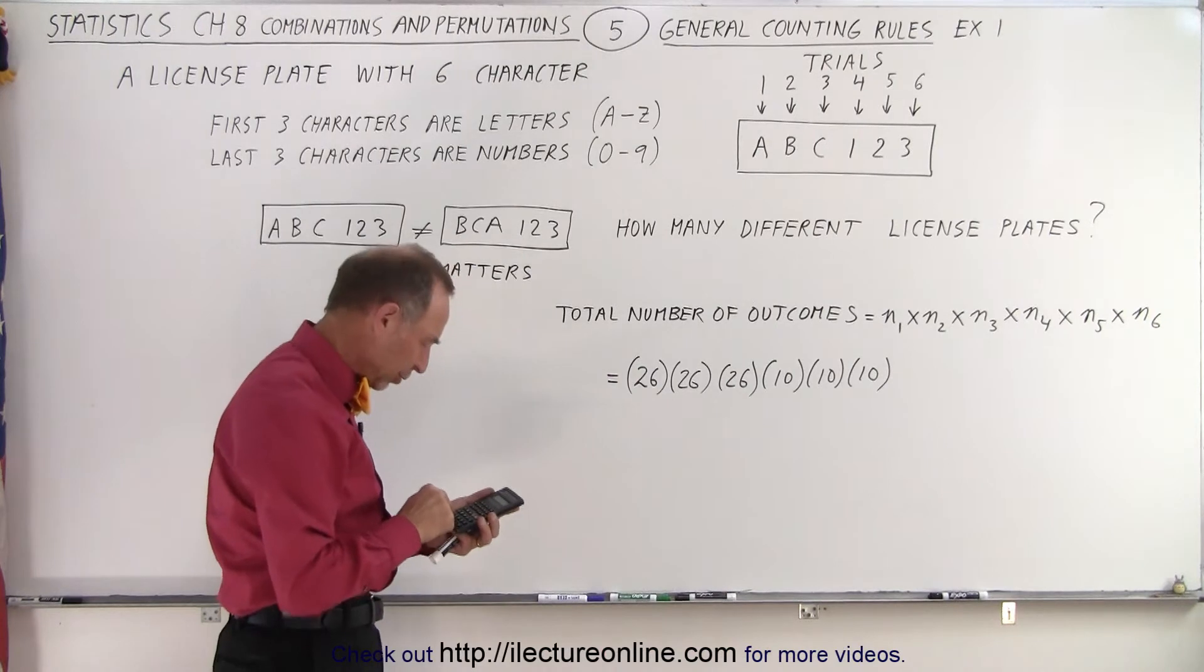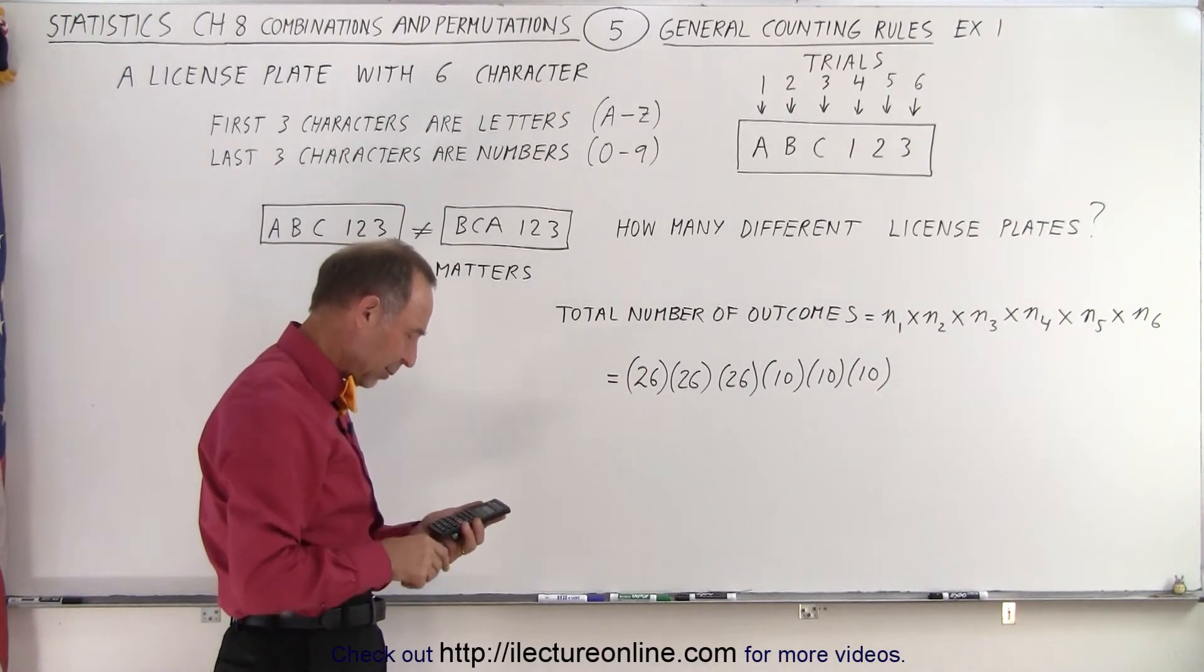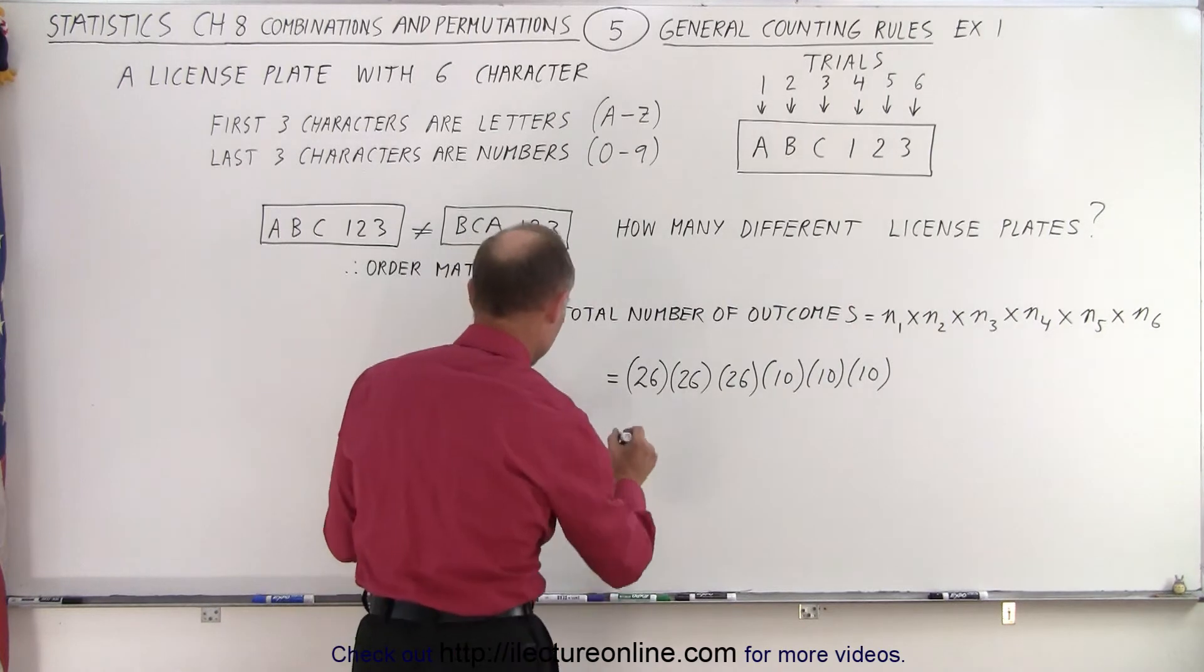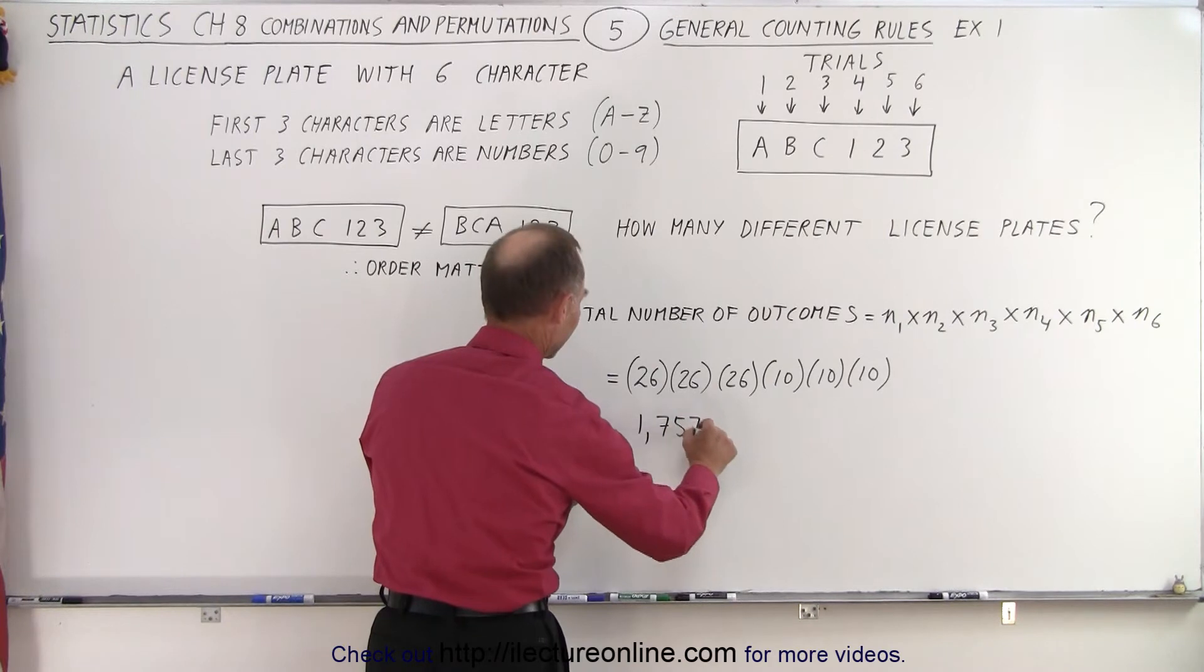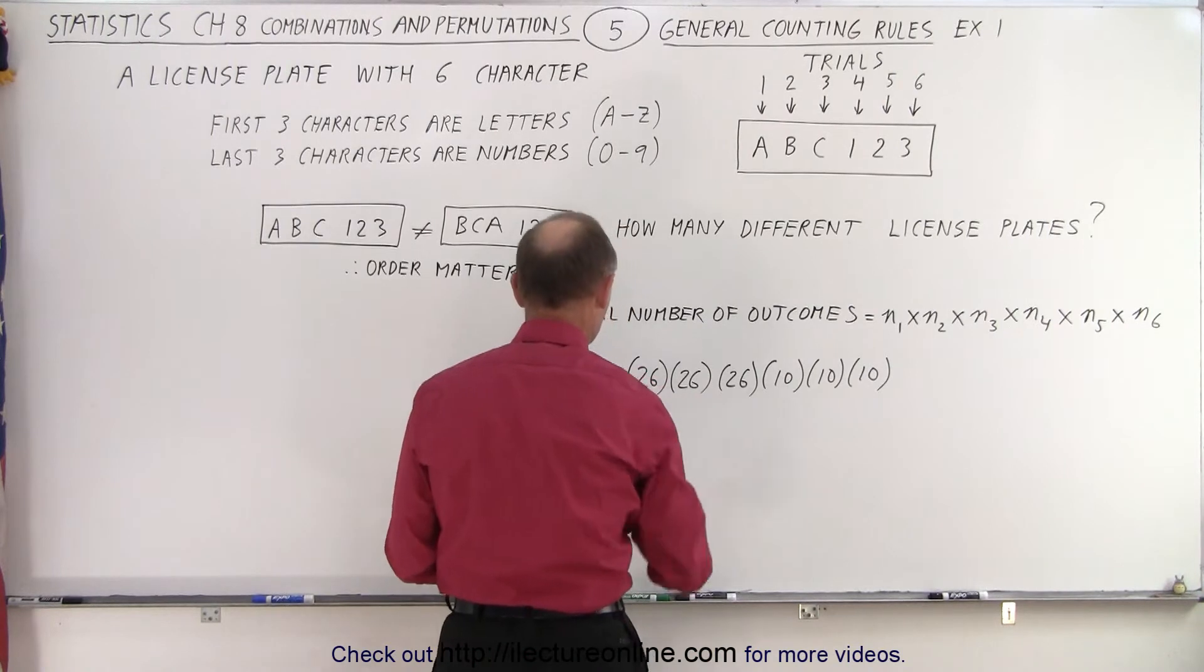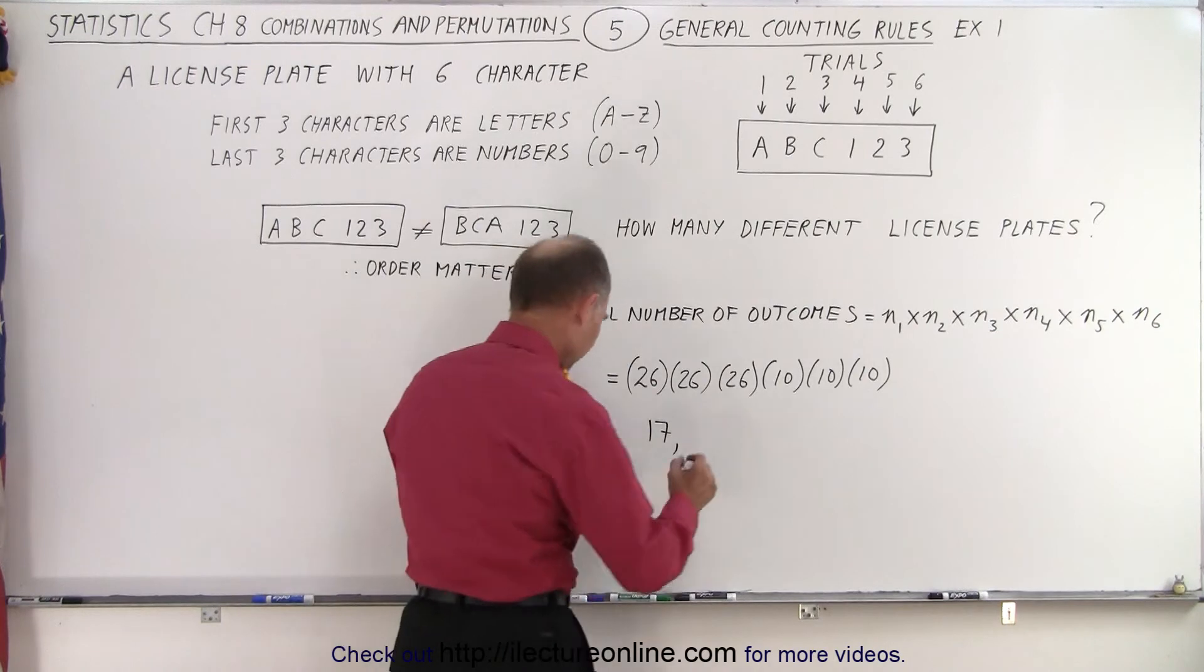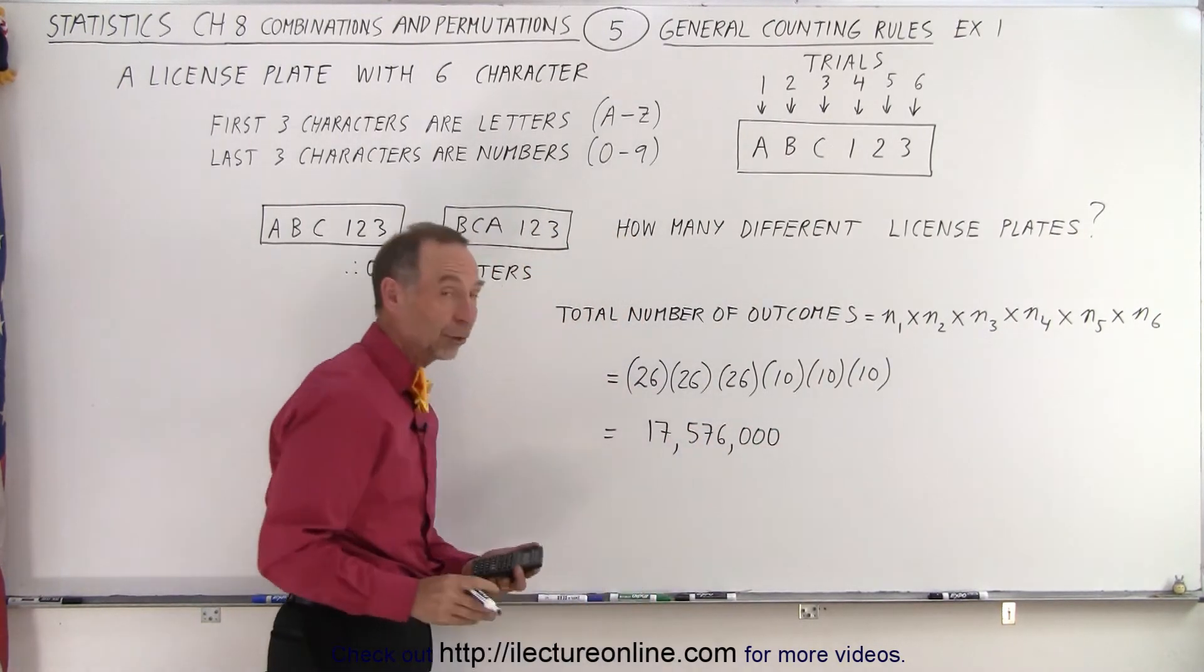And let's see what that's equal to. 26 raised to the third power times a thousand. So this is equal to... let me check... we have a total of 17 million, 576 thousand different license plates. Those are the total number of permutations.